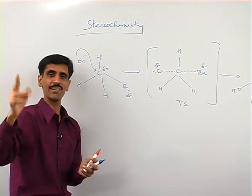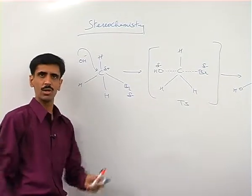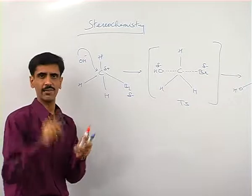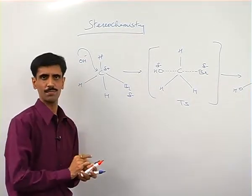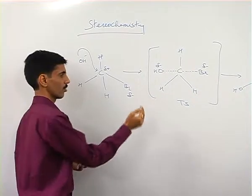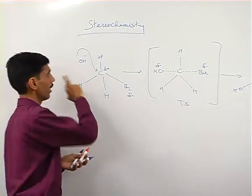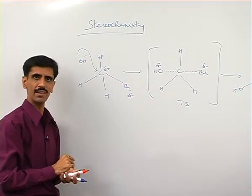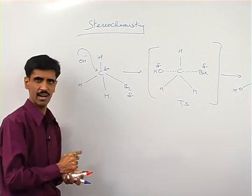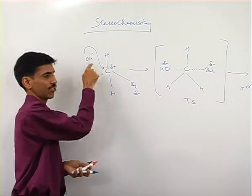Then what happens my dear friends is, OH- that means it is a nucleophile, Br minus is also a nucleophile. Both have the same charge negative-negative and because of that there is a force of repulsion if OH minus is going to attack from the front side. But if the OH- is going to attack from the backside, then what will happen is, OH has negative charge and carbon is positively charged. So there is going to be a force of attraction.